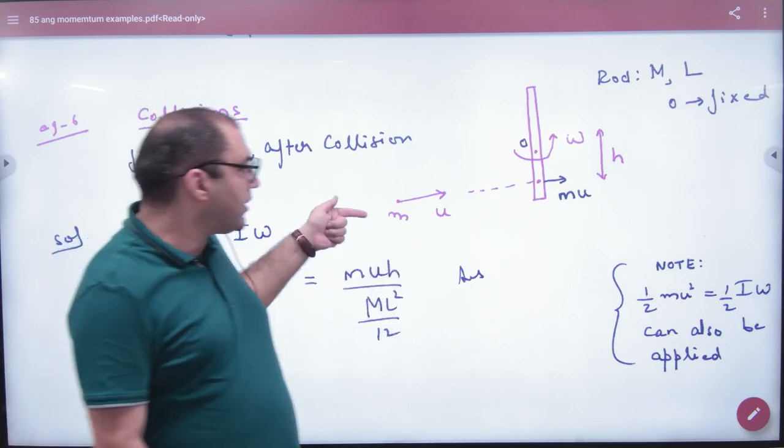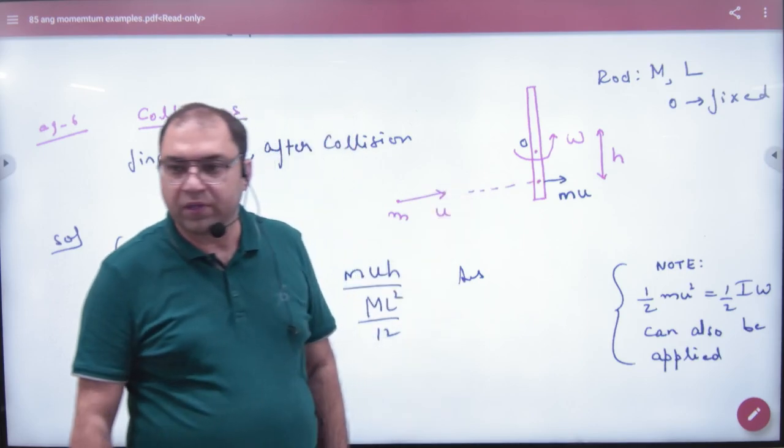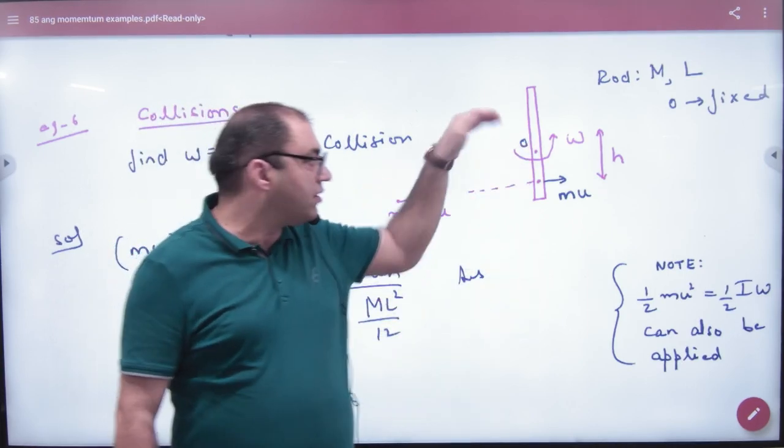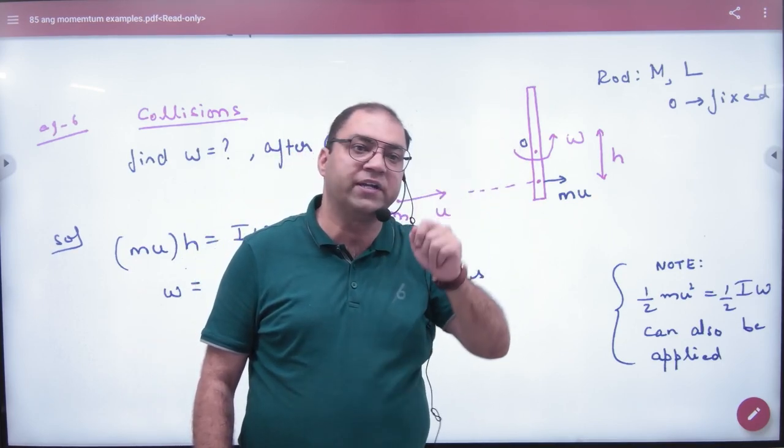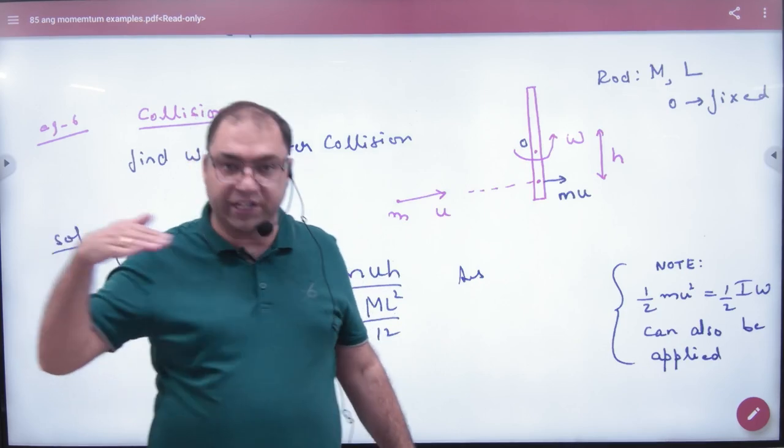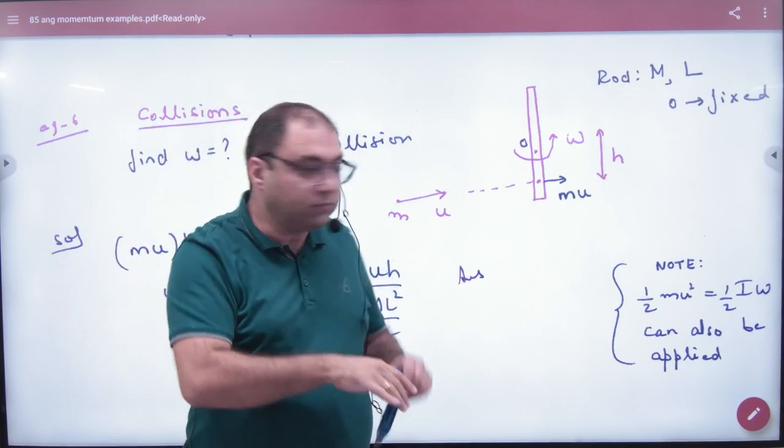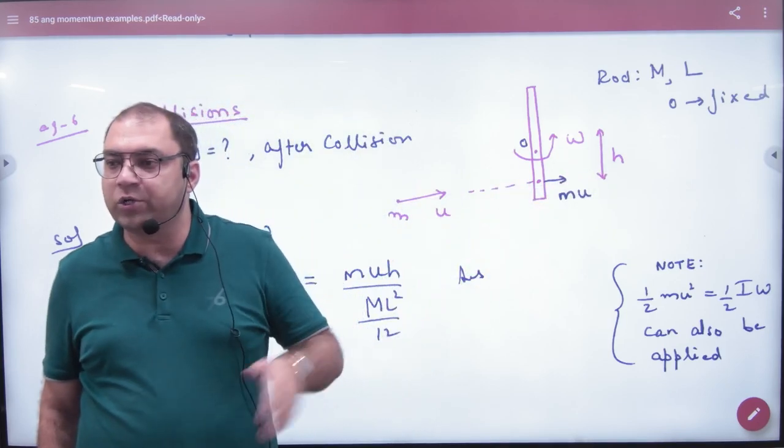This particle is mu hitting at a perpendicular distance h from O point. What is the angular momentum about O point? Angular momentum is linear momentum mu into perpendicular distance from the axis. So this is mu and this is h. Angular momentum is mu into h.